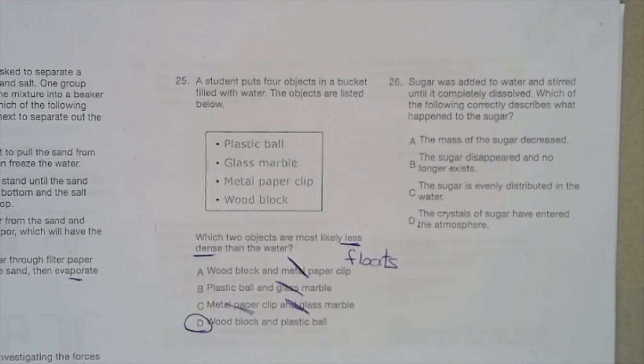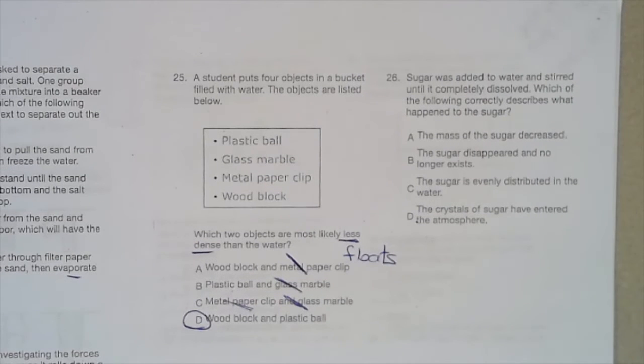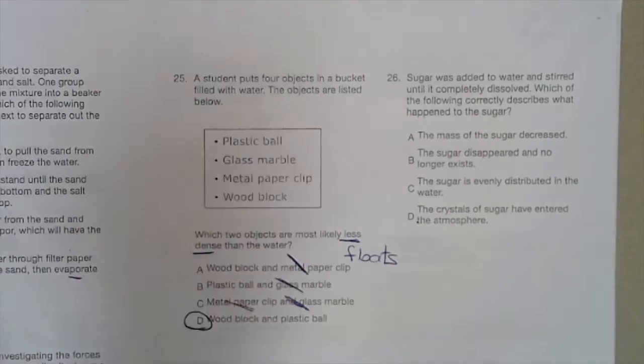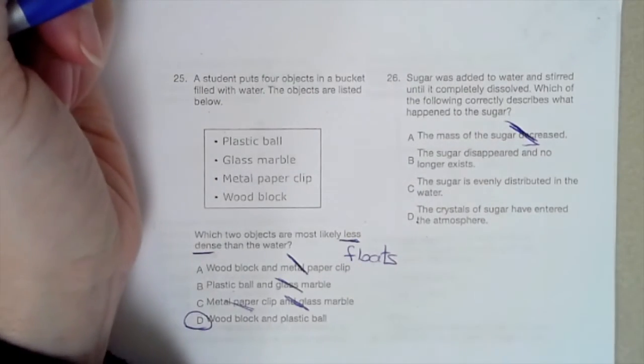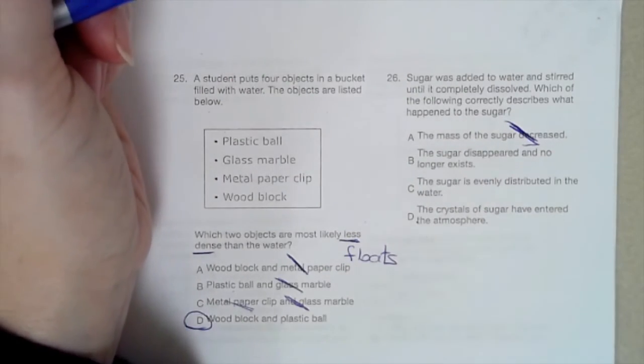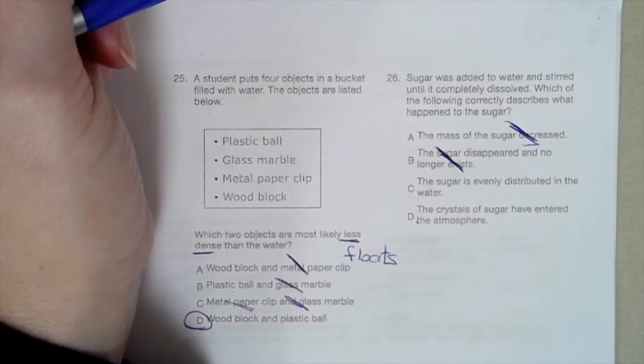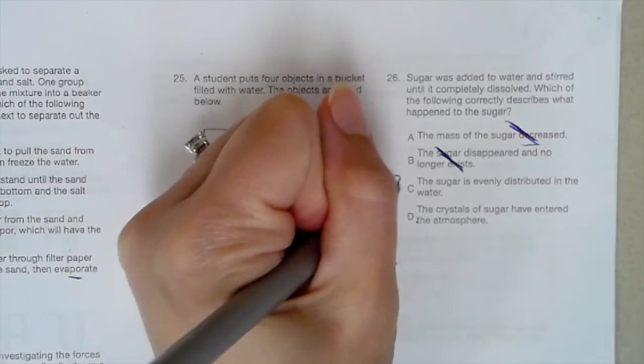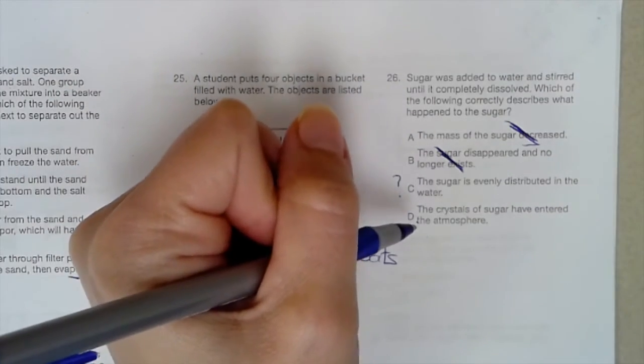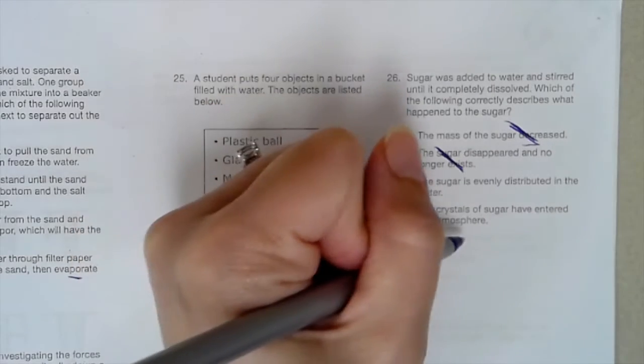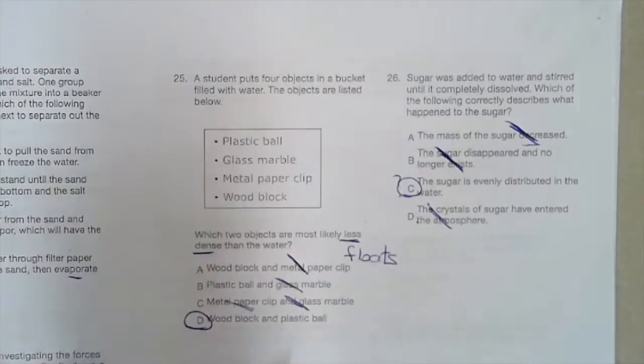Number 26. Sugar was added to water and stirred until it completely dissolved. Which of the following correctly describes what happened to the sugar? The mass of the sugar decreased? No. Remember, the mass is neither created nor destroyed. It stays the same. So it cannot be decreased. The sugar disappeared and no longer exists. Yes, it does. It's still there. The sugar is evenly distributed in the water. That sounds correct. The crystals of sugar have entered the atmosphere. That means they're in the air. No, they're not. So they have evenly distributed with the water.